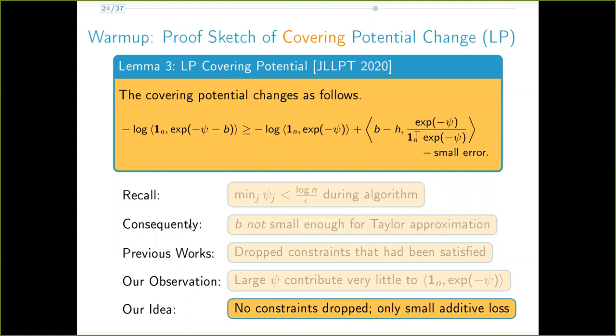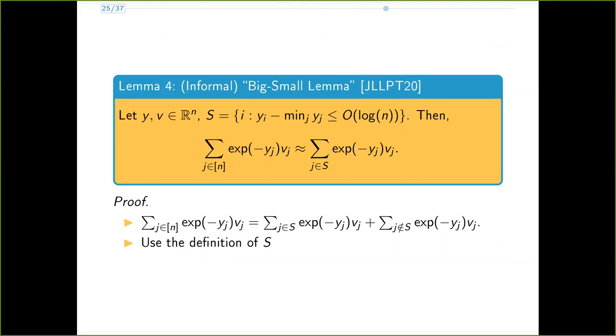This issue motivated our observation that the large values of psi don't affect exp of negative psi that much. We, therefore, do not drop any constraints and instead Taylor-expand the left-hand side around small coordinates of psi and add back in the terms with larger values of psi, suffering only a small additive loss. Here's an informal version of the result that we just stated. The proof follows by splitting the sum on the left-hand side into sum over terms that have large yj's and those that have small yj's and using the fact that the difference between the small yj's and the smallest yj is at most a polylog quantity. This concludes the proof sketch of the covering potential lemma in the LP setting.